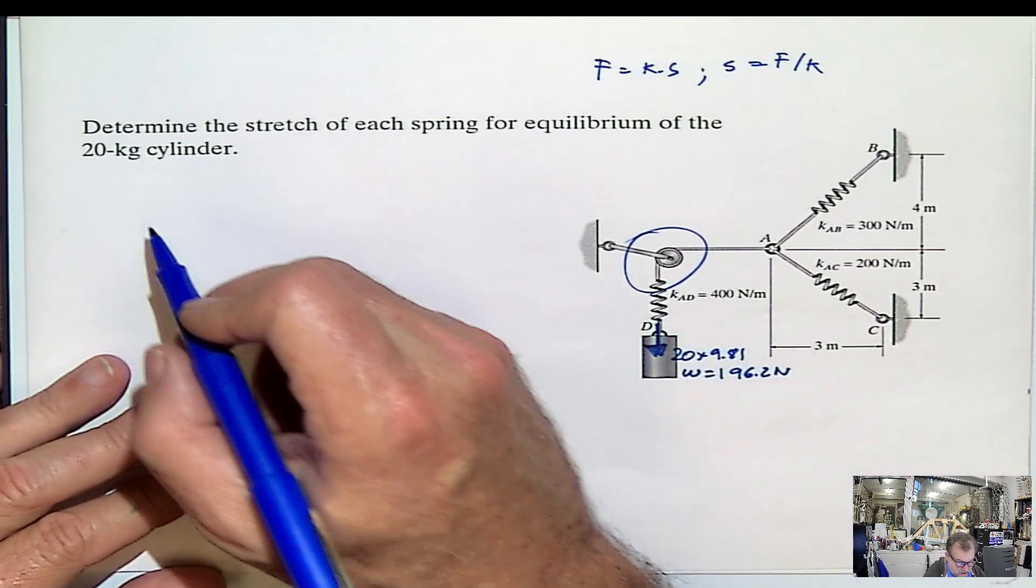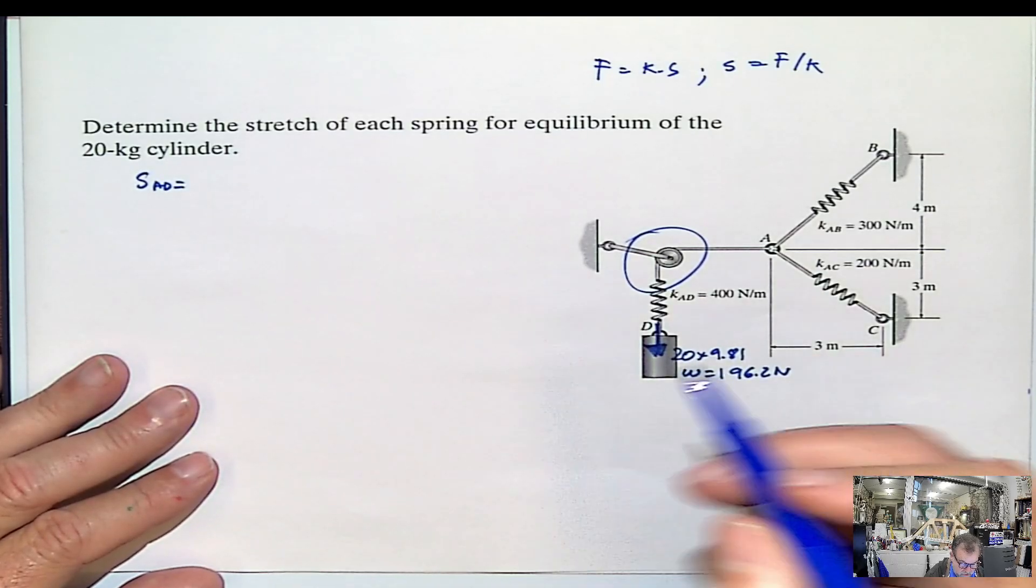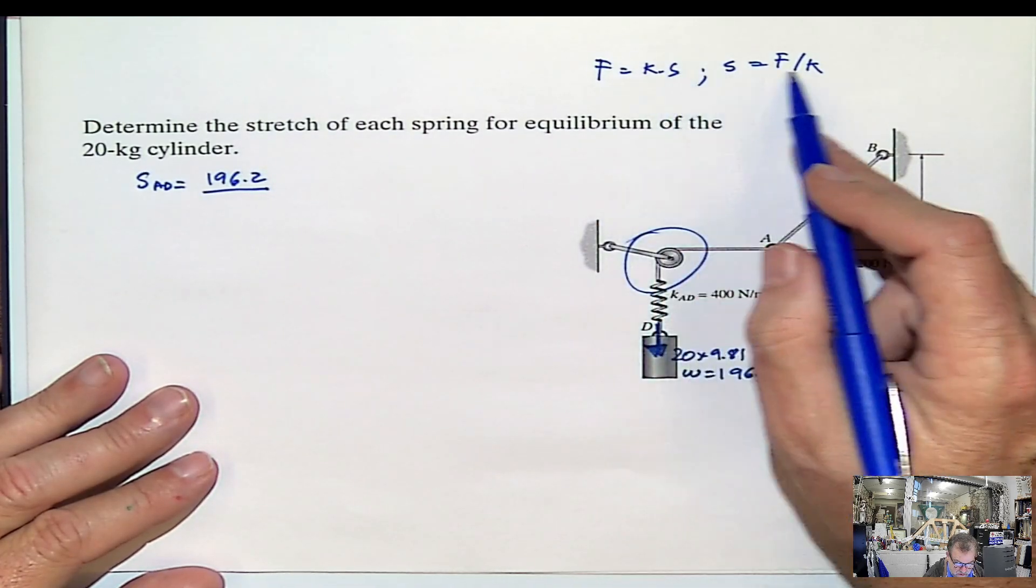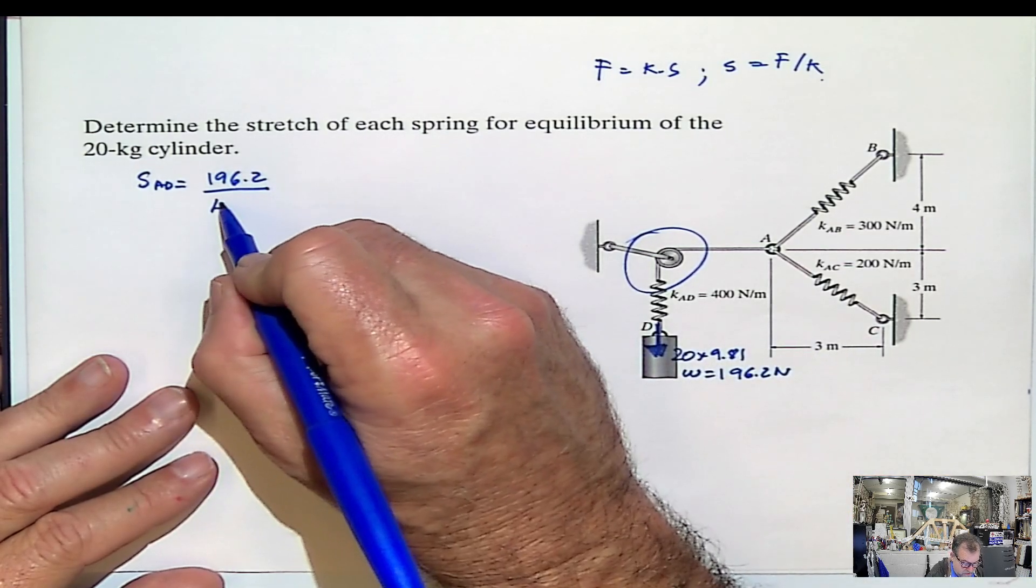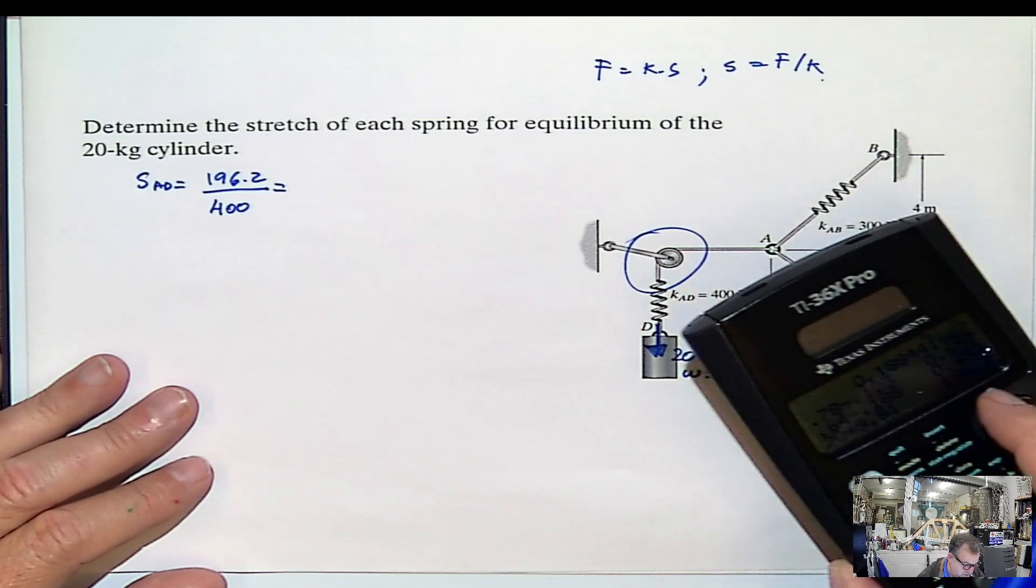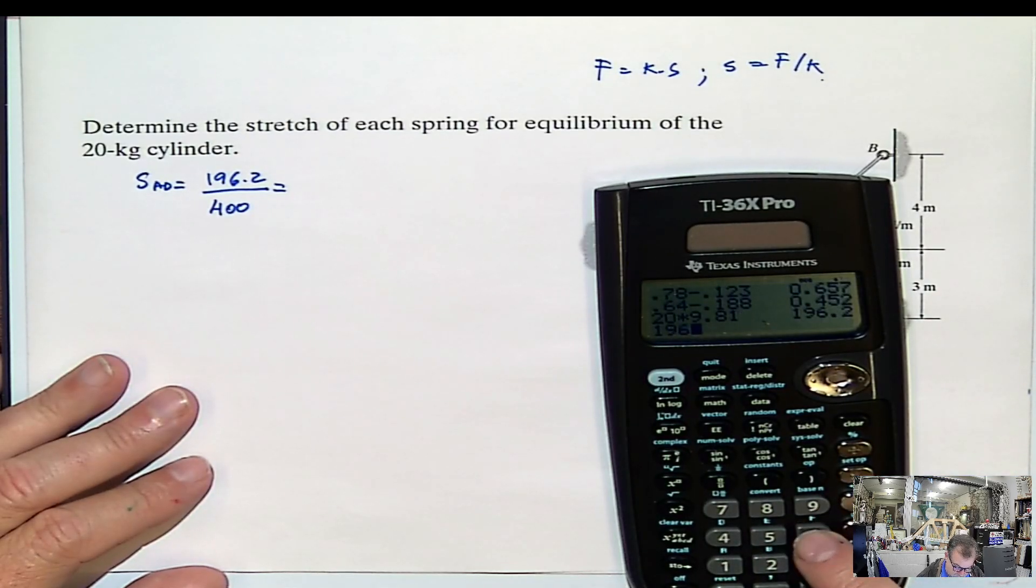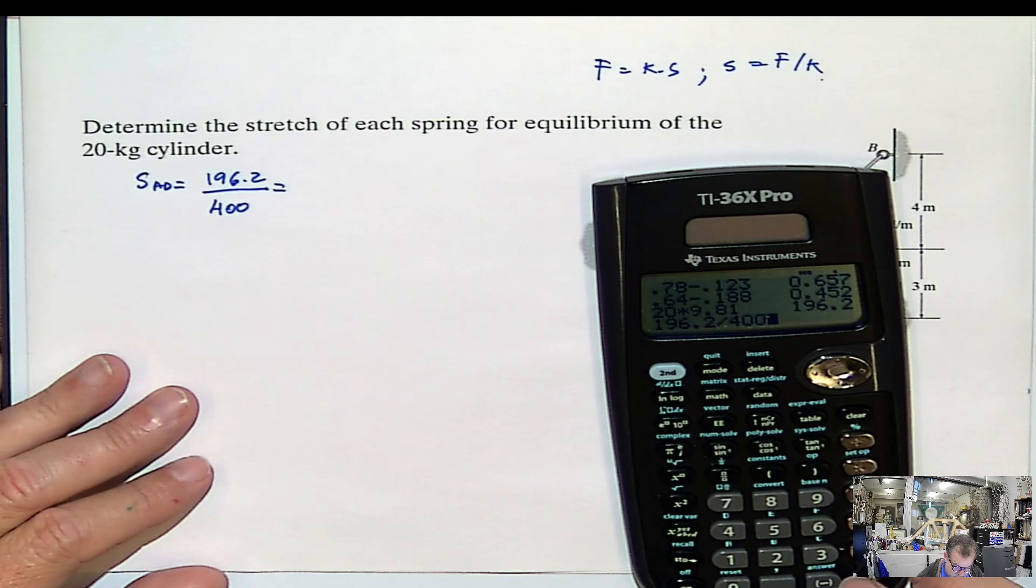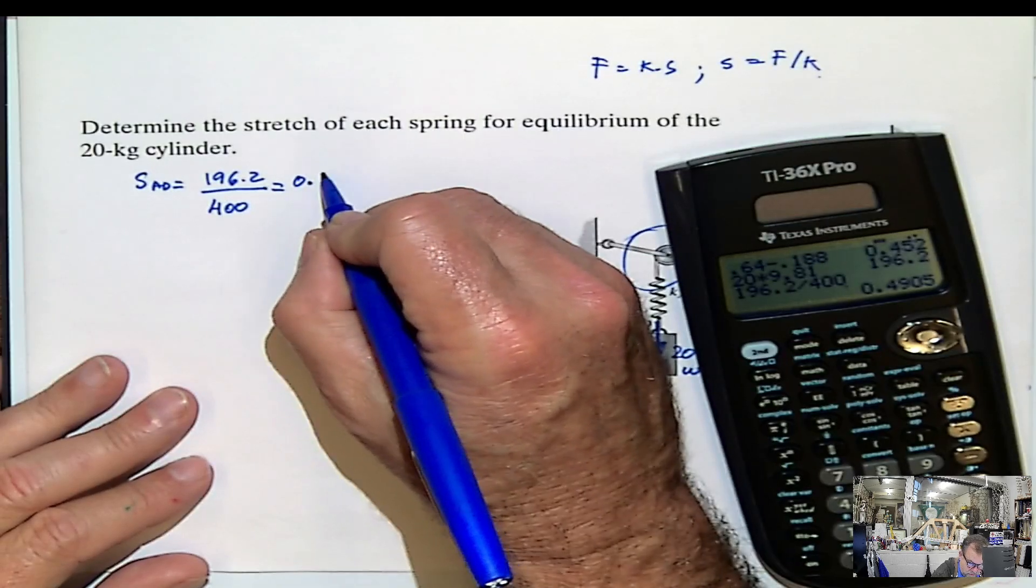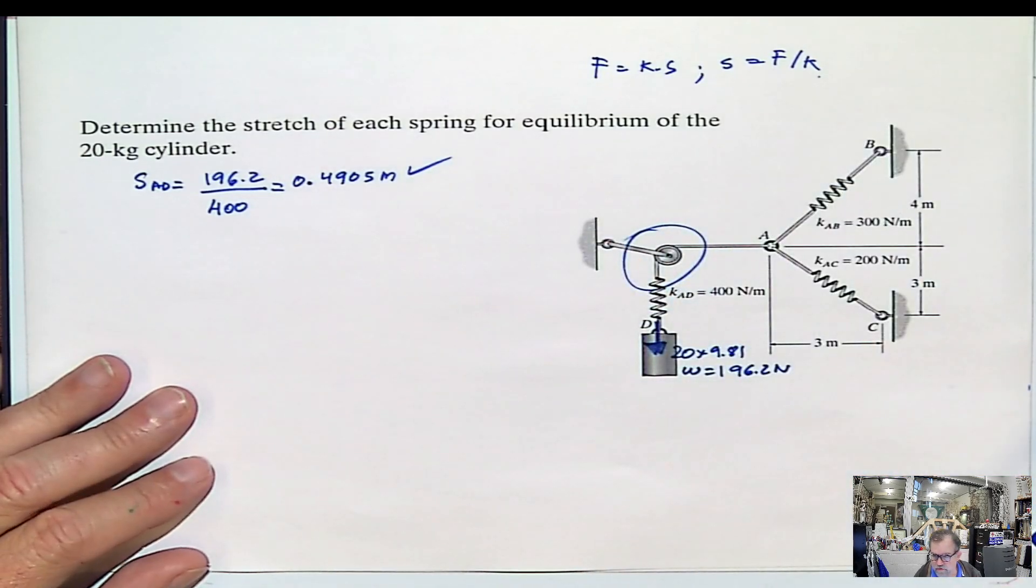So for a spring AD, I can say stretching of AD is equal to the force. This is the only force, 196.2, divided by the constant, 400 newton per meter. And the stretching of that spring AD will be 196.2 divided by 400. That will be 0.4905 meters. So first one ready.